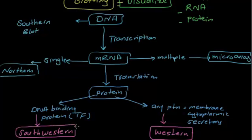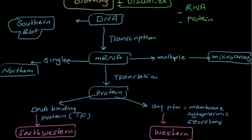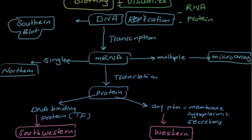Now for exam tips. Questions are usually 5 to 7 lines describing an experiment. Just focus on the key point. If the question is about visualizing something at the DNA level — such as replication — go with Southern blot. Southern blot is usually the answer for anything at the DNA level.